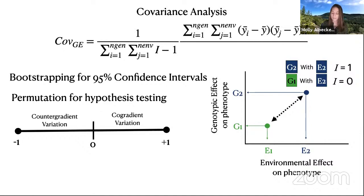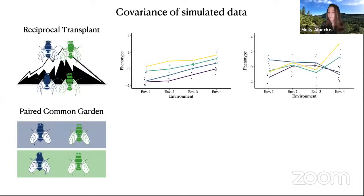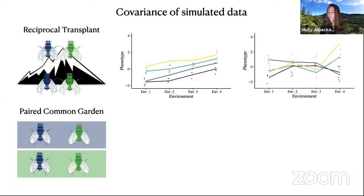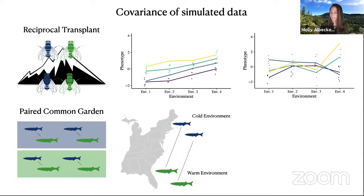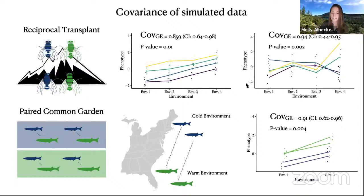We use bootstrapping to generate 95% confidence intervals by sampling phenotype with replacement from each genotype-and-environment group, and permutation for hypothesis testing — resampling phenotype across genotype and environment without replacement to generate a null distribution. This yields sample estimates of CovGE ranging from −1 to +1: values below zero indicate counter-gradient variation (stronger the further from zero), and values above zero indicate co-gradient variation. The approach works for both common garden and reciprocal transplant experimental designs.